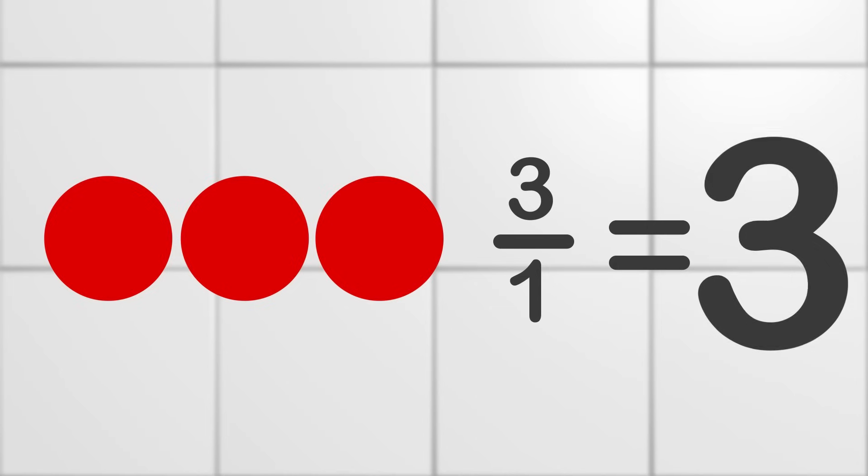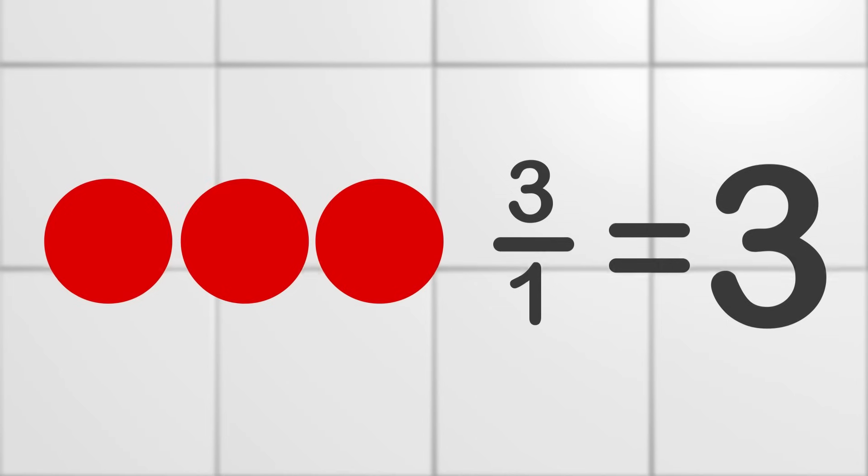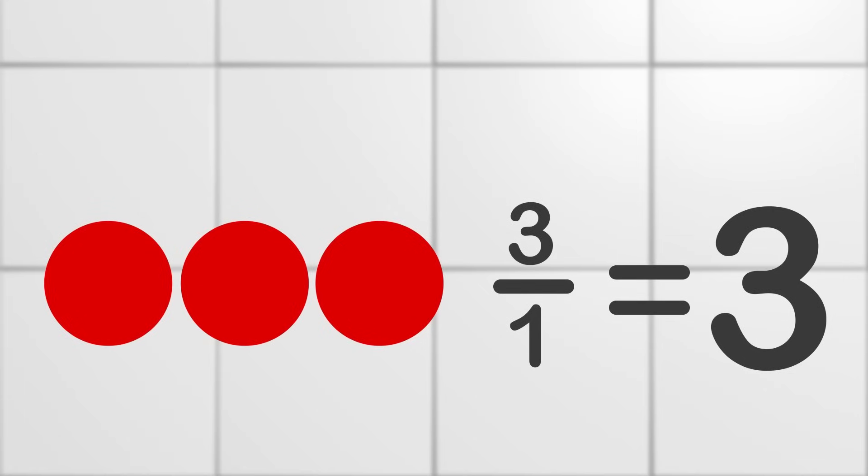You might be thinking that is kind of hard to understand. Shouldn't the fraction be 3/3 because there are three whole circles? Well, that is not true because we just learned that 3/3 is the same or equal to 1. So in order to write three whole circles into a fraction, you would write 3/1. Great job. Let's take a look at a problem you might encounter.